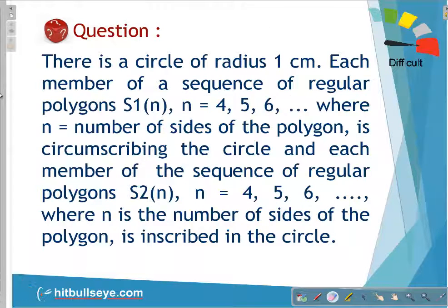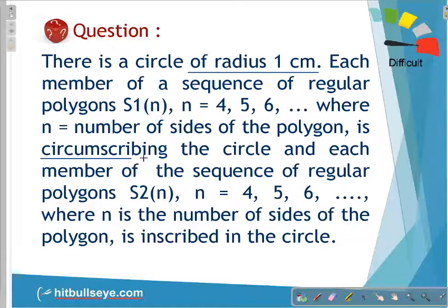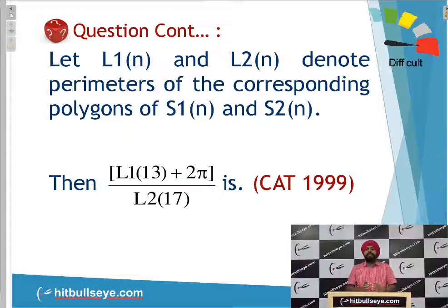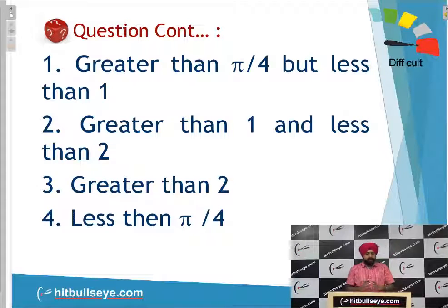So let's have a look at the question. It is given that a circle has a radius of 1 cm, and there are certain polygons circumscribing this circle referred to as S1, and certain polygons inscribed in this circle referred to as S2. The given expression to evaluate is: L1_13 plus 2π divided by L2_17, with the answer options provided.